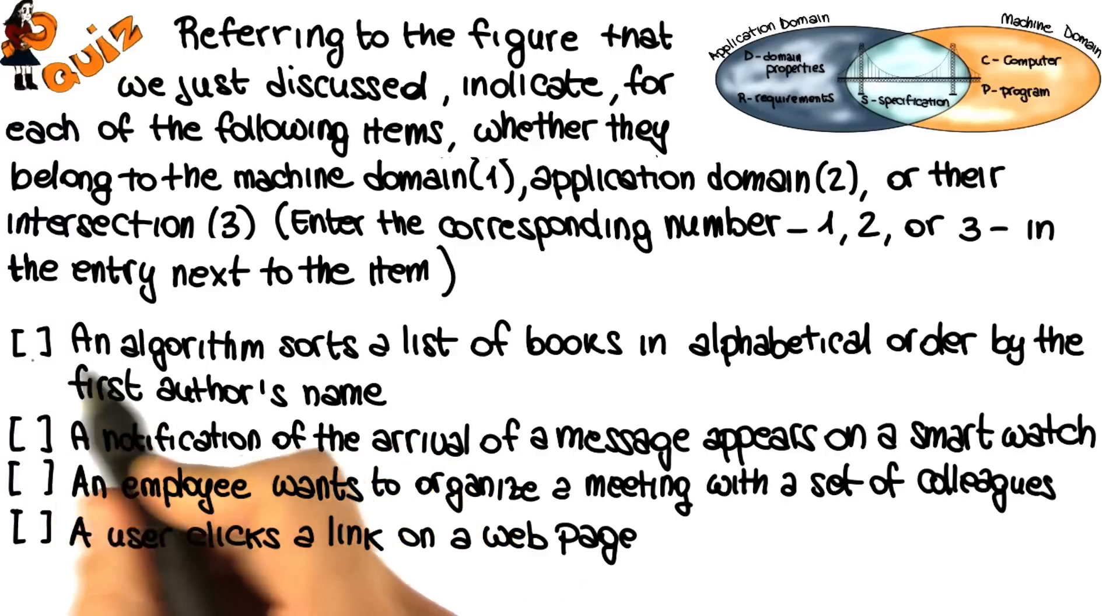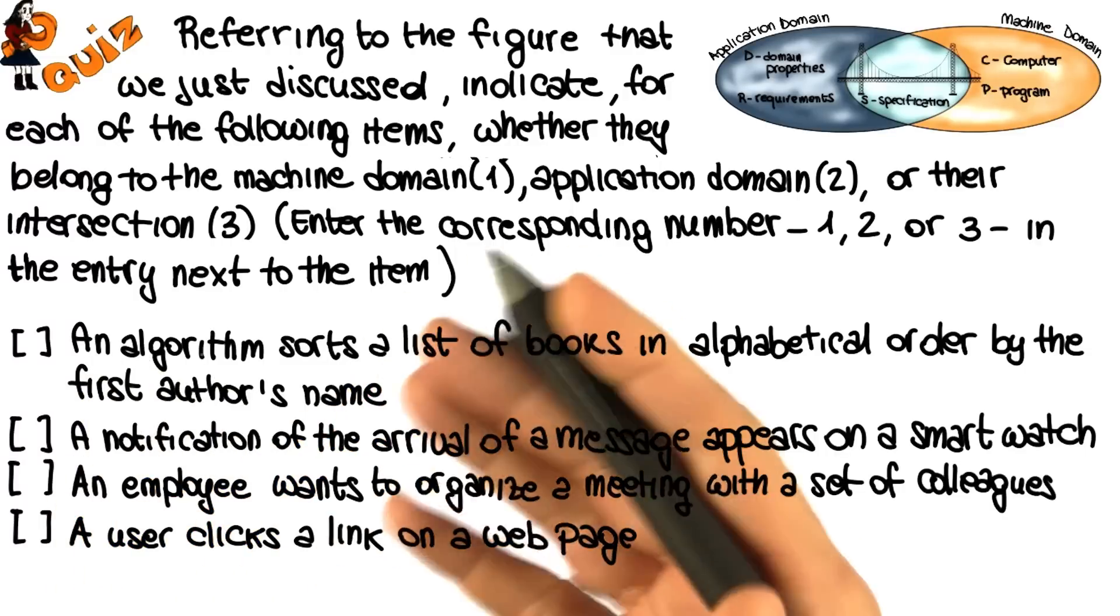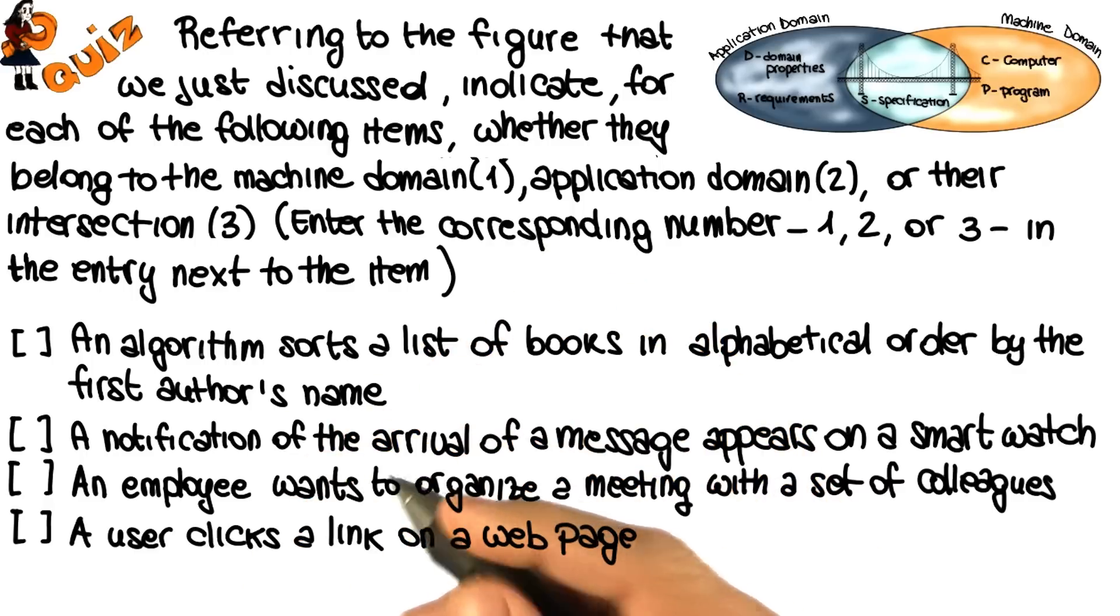Let's look at each one of these items individually, starting from the first one. This item has to do with how the machine stores the information and how the corresponding algorithm is written.